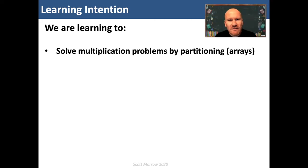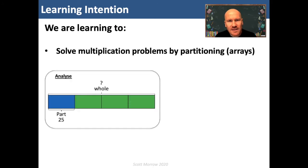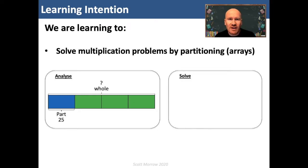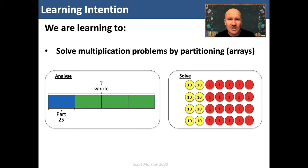Hi guys. During previous weeks when we've looked at multiplication and division problems, we've focused on analysing those problems using bar models to understand the relationship between the values, in order to help us make decisions about the strategy that we're going to use. This week we're going to focus on developing success criteria for a particular strategy.